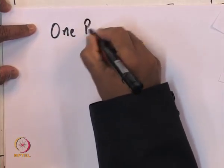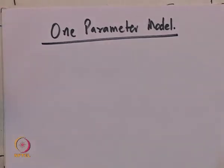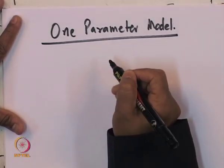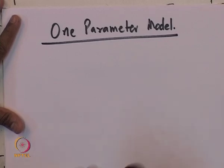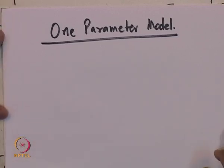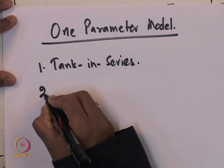This is a problem with the zero-dimensional model — for a non-first-order reaction it gives a range of conversion, because we consider two extremes and are not really looking at what is happening inside. In this chapter we are going to look at different models. One of them is the one-parameter model. I have an additional parameter that is going to give me some idea about the conversion — it will help me get the exact value of conversion for the given E curve. The two types of one-parameter model we are going to discuss are the tank-in-series model and the dispersion model.